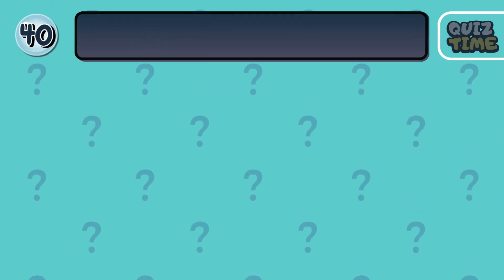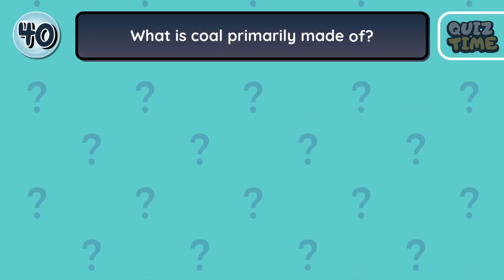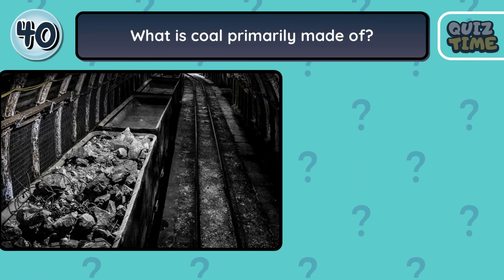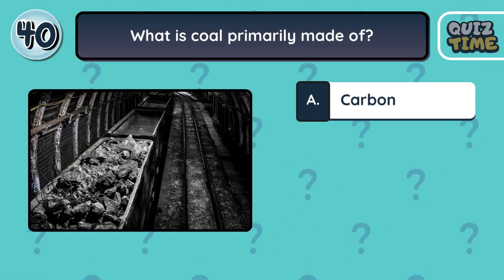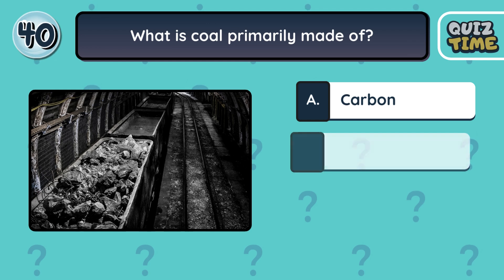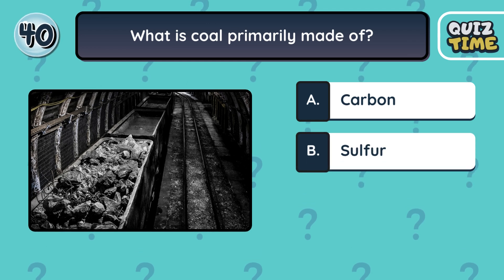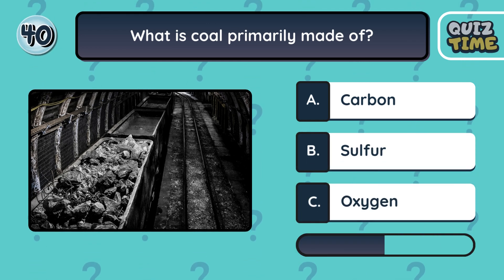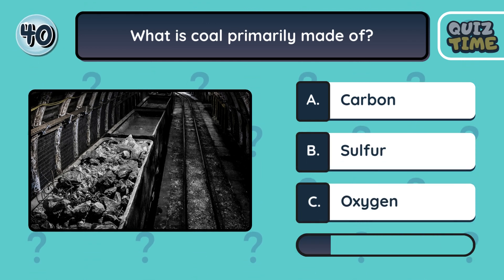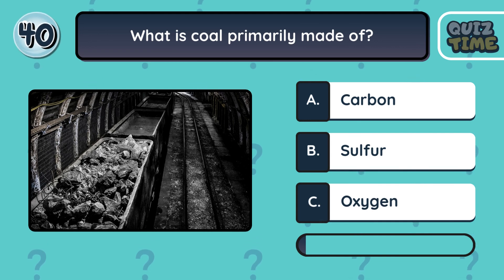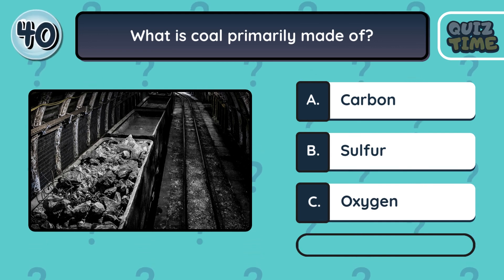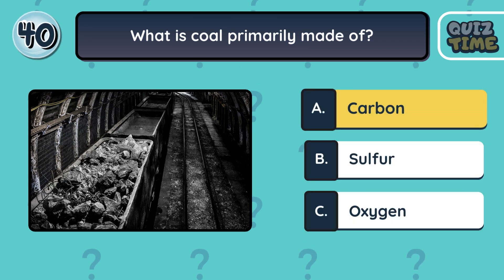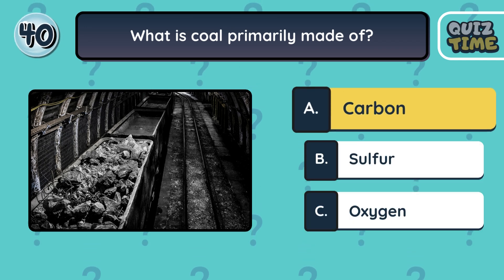Number 40. What is coal primarily made of? A. Carbon. B. Sulfur. C. Oxygen. The correct answer is A. Carbon.